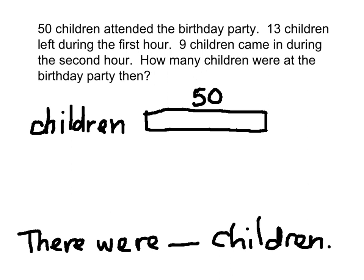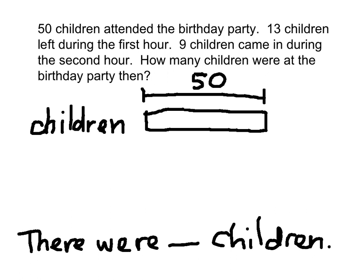I forgot to do something — I'm going to do it right now. I'm going to erase this 50 because once you draw a bar, always draw its length. From here to here represents 50, so I'm going to put a 50 right up there. 50 children attended the birthday party — have I taken care of that piece of information? Yes, so I put a check mark at the period. Continue reading where the check mark is.